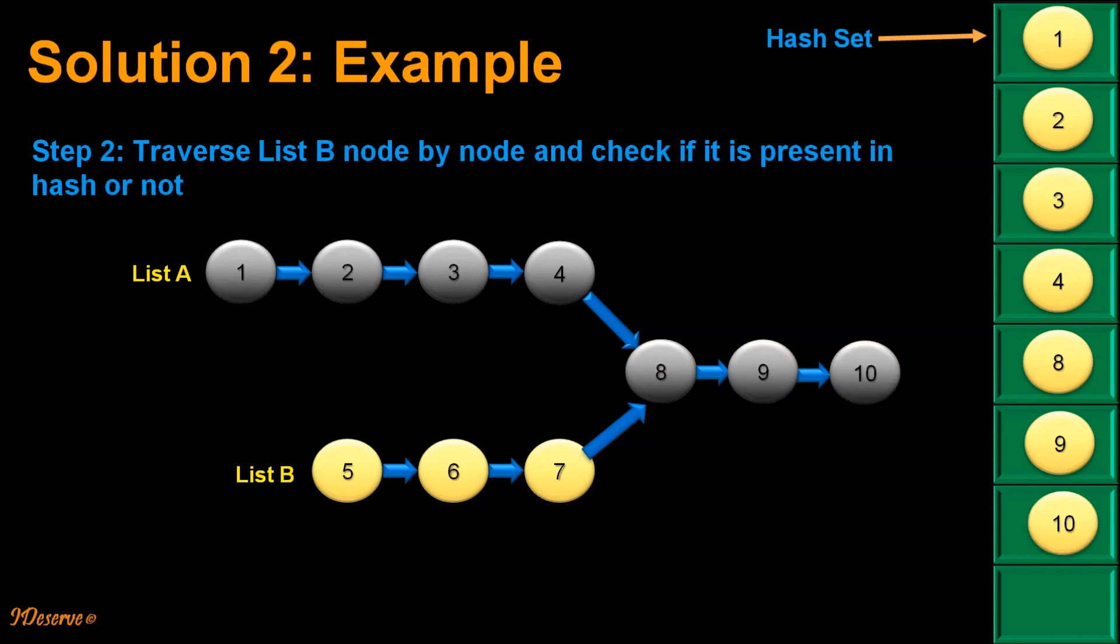Now step 2 is traverse list B node by node and check if it is present in hash set or not. So we start with the first element. We see it is not present.